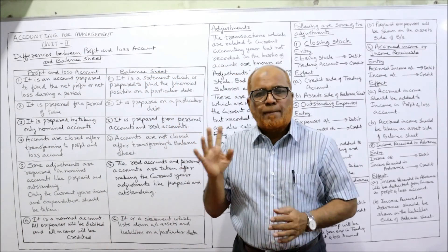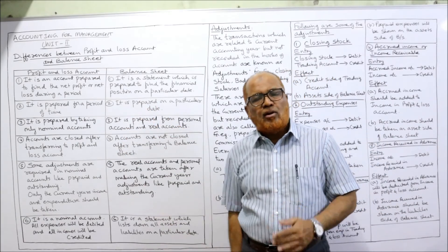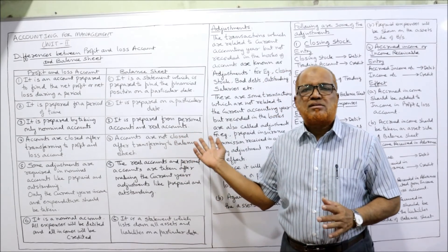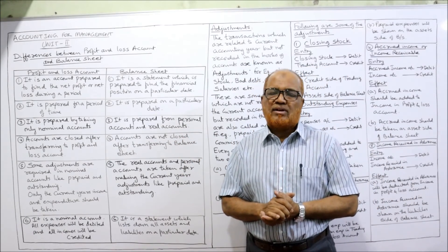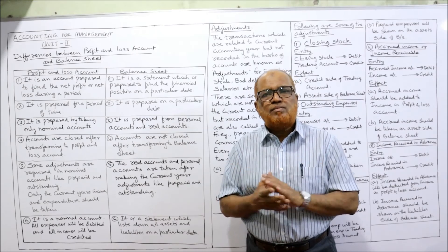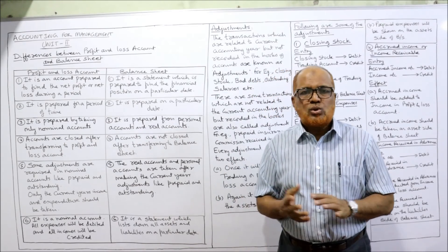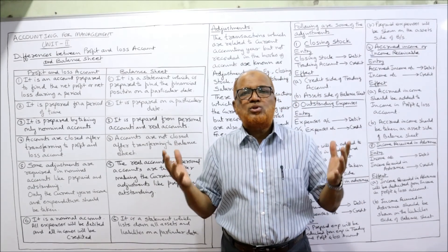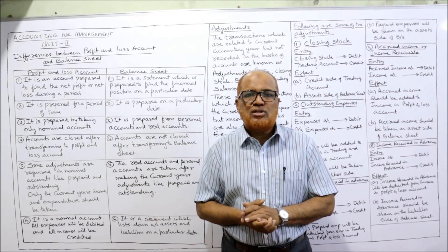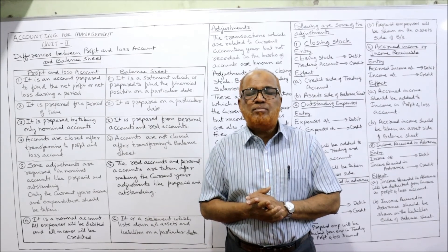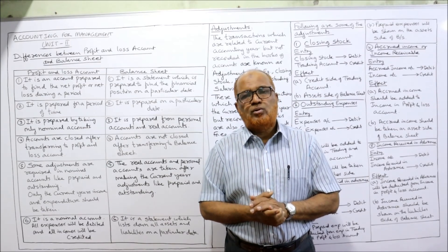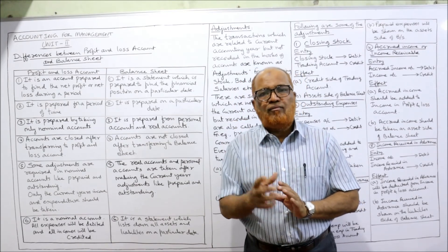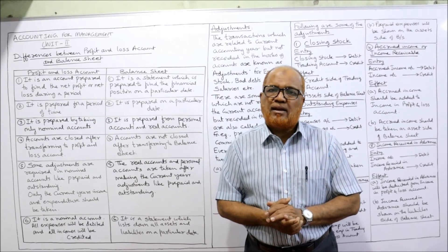So in this video I have explained two topics: first, the differences between profit and loss account and balance sheet, and second, the meaning of adjustments along with five examples. The remaining adjustments will be explained in the next video. If you are satisfied, please give a like, share the channel among your groups and friends, subscribe if you haven't yet, and leave comments. We'll continue with the next topic in the next video.